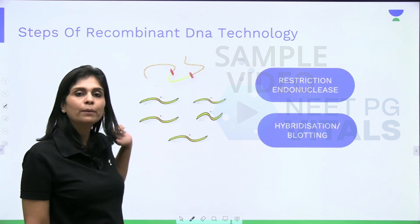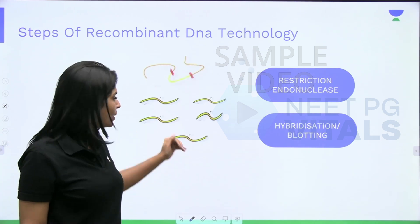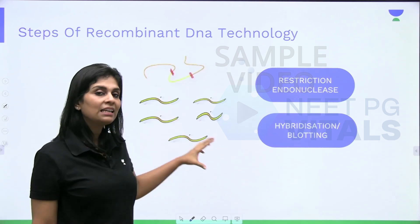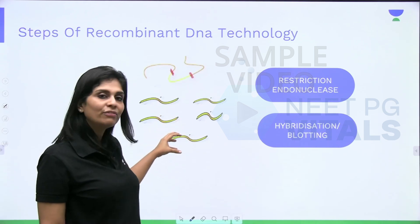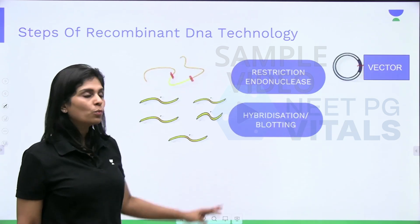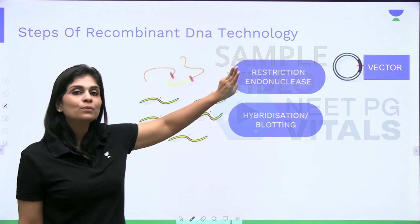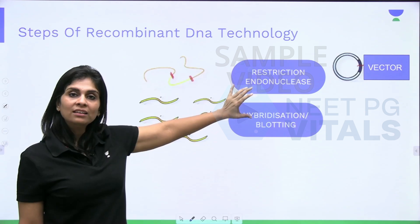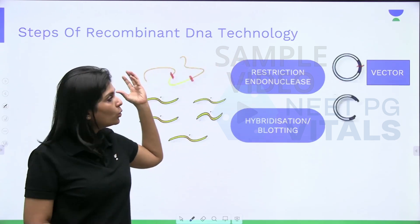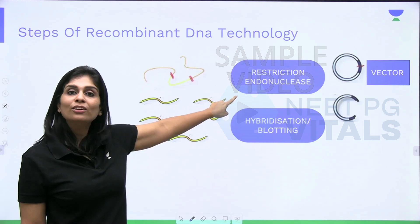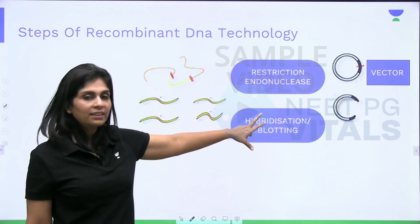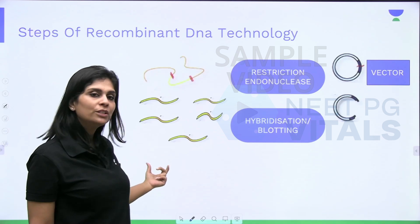Using hybridization or blotting technique you have identified the fragment with the gene of interest. Now you have to introduce this fragment into E. coli, but it cannot get in directly — it needs a vehicle to carry the fragment into E. coli. That vehicle is called the vector, which is the third tool. After you identify the vector, you cut it using the same restriction endonuclease used for cutting the human chromosome.